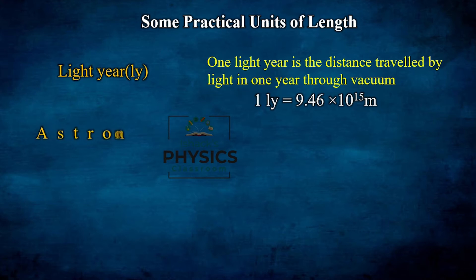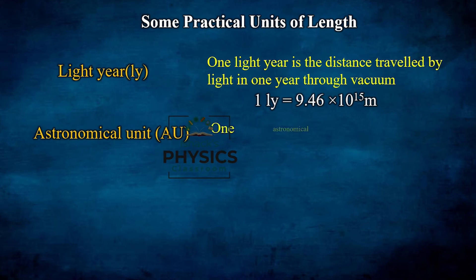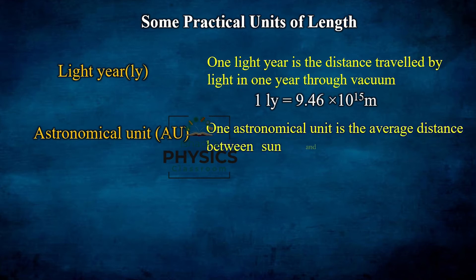The second practical unit of length is the astronomical unit (AU). One astronomical unit is the average distance between the Sun and Earth. The planet Earth revolves around the Sun in an elliptical orbit, as described by Kepler's theory.